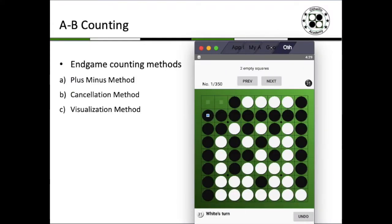Now let's talk about A-B counting. Why do I call it A-B counting? It basically means counting two empties—it's either A choice or B choice. Let's talk about endgame counting methods. There are essentially three basic methods: the plus-minus method, the cancellation method, and the visualization method.